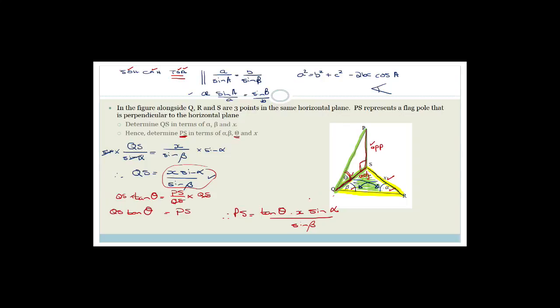Remember what I said — you need to find the bridge. They kind of helped you by saying determine QS first, which is your bridge. You work out that line and then use it in the other triangle. They gave you what you needed to work out.